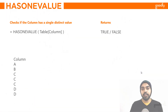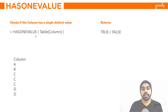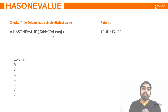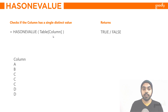The HASONEVALUE function does exactly what it says — it checks if the column that you mention inside the formula has got one distinct value or not. In terms of syntax, what you would write is HASONEVALUE, and you write one column of any particular table.